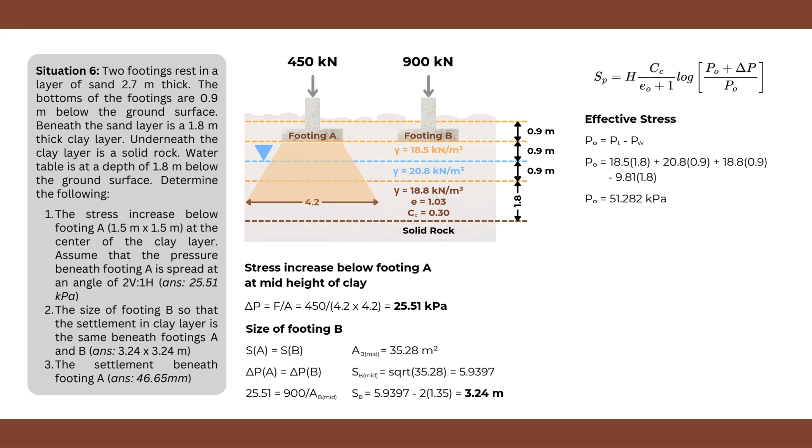Finally, we just plug in our values to the settlement equation. H is equal to 1.8, compression index is 0.3, initial void ratio is 1.03, initial effective stress is 51.282 kilopascals, and our stress increase is 25.51 kilopascals. After solving we will get a value of 0.0466451 or 46.64 in terms of millimeters. So there you have it, this situation is finally solved.